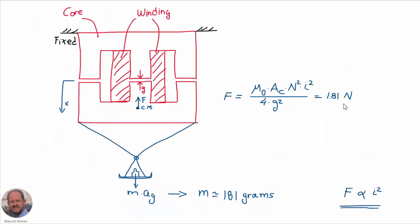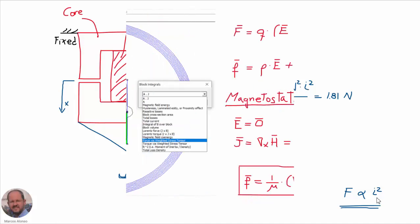To understand the meaning of 1.81 newtons: if we hang a weight from the movable part of the core, this means we can place a mass of 181 grams before the movable part starts to separate from the other part — a considerable value. Also, the force is proportional to the square of the current, so if we double the current in the winding, we produce a force four times the previous value.